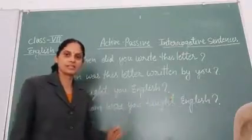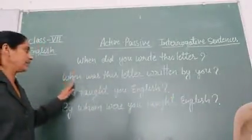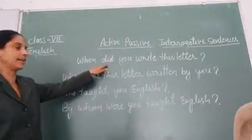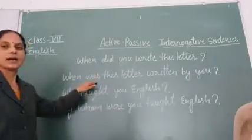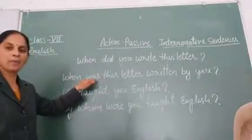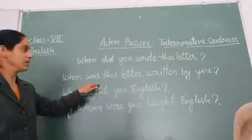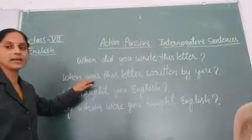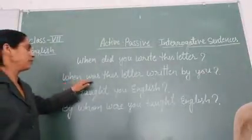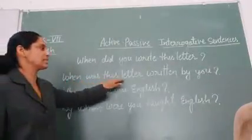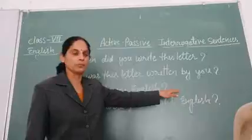Is it clear? When we see 'did' in the active voice, in place of 'did' we use the helping verb of the same tense. That is why here we use 'was': When was this letter written by you?